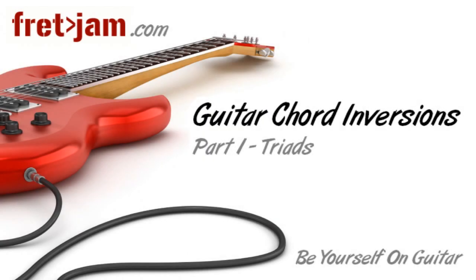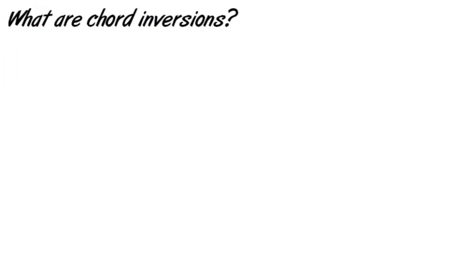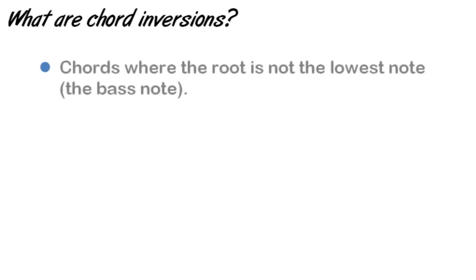Chord inversion is a relatively advanced concept, but it shouldn't be too difficult to grasp if you've been through the chord theory series on the site and if you break it down in the way I'm about to show you. Using its simplest definition, a chord inversion is where the root is not the lowest note — often called the bass note — in a chord. This means another note in the chord occupies the bass position.